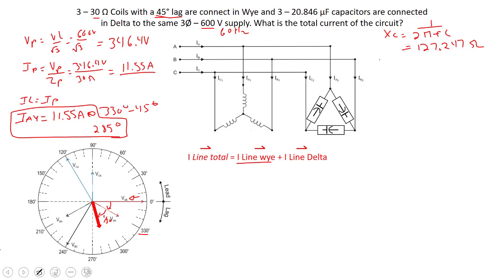The next thing we can do is calculate our phase current, our IXC in each phase. I phase for this one, we're going to take our voltage of the phase and divide it by our XC in the phase. So we have 600 volt supply and we're going to divide it by 127.247 ohms.